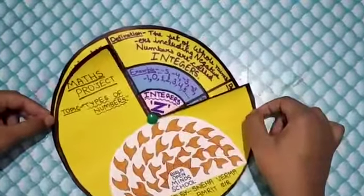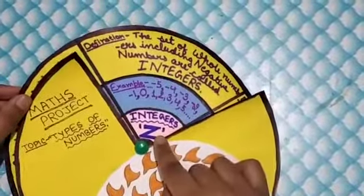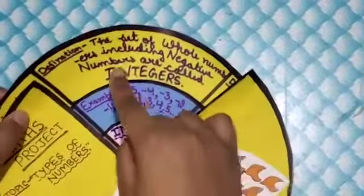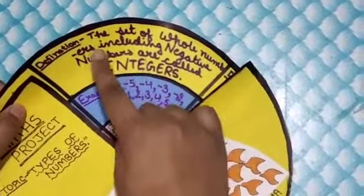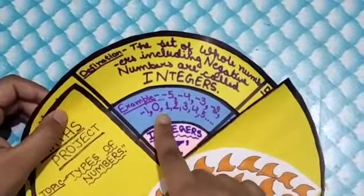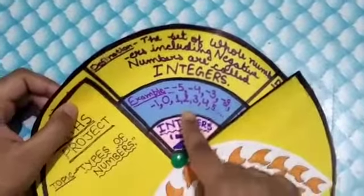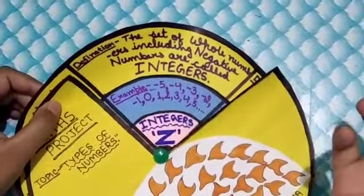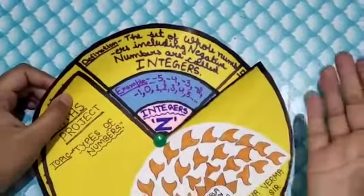Next, integers. Its sign is Z and the definition of it is the set of whole numbers including negative numbers are called integers. And the examples for it is minus 5, minus 4, 0, 1, 2, 3 till infinity.